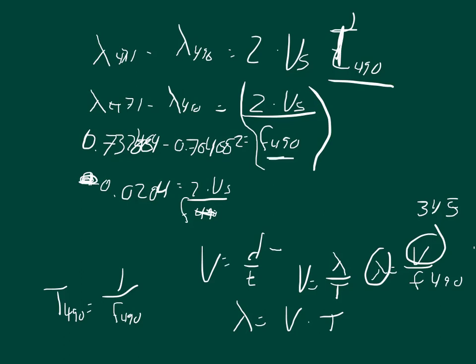And so we can multiply this number by the frequency, and then divide it by two. So we can take 0.0284 times 490 divided by two. This should equal the velocity of the source.